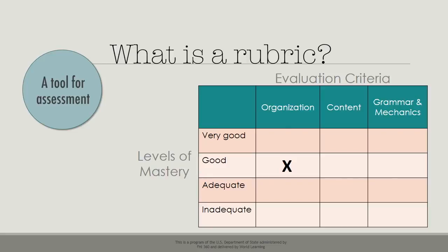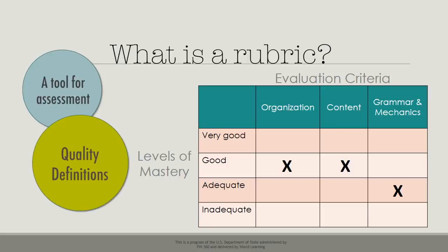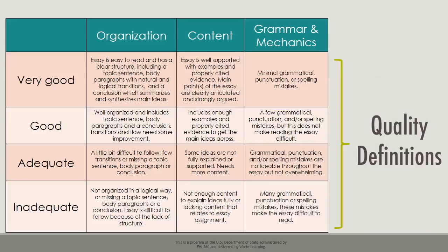In addition to evaluating the organization, the teacher will also assess the content and the grammar and mechanics. How does the teacher decide which level to choose? Quality definitions for each level of each skill are included in the rubric. The teacher chooses the level whose description best describes the student's work. In this case, the descriptions for the level 'good' fit the student's work in terms of organization and content, while 'adequate' best describes the quality of grammar and mechanics.